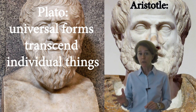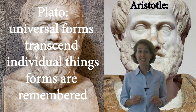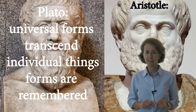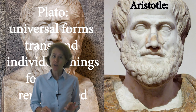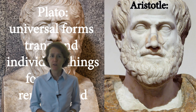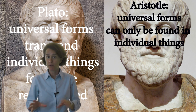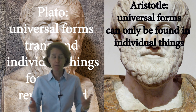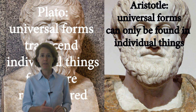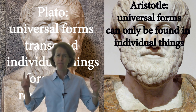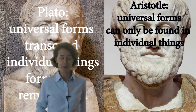Plato thought we could recognize a dog only by remembering the ideal of dogness. Not so for Aristotle. For Aristotle, the form of dog existed only in actual dogs. If there were no dogs, there would be no form of dogness, and people learned about the form of dogness not by remembering the ideal but only by encountering real dogs in lived experience.